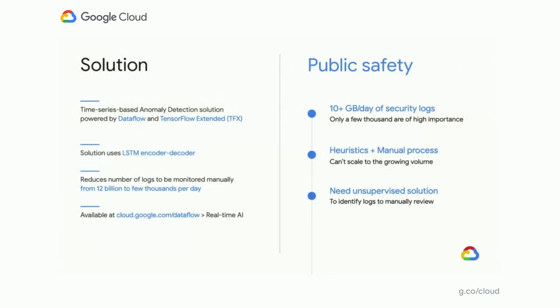Remember our motivating example with the public safety agency? We worked with this agency and created a solution based on a time series anomaly detection approach, powered by Dataflow and TensorFlow Extended. This solution uses an LSTM encoder-decoder pattern, and it reduced the number of logs that needed to be monitored manually from billions per day to just a few thousand per day — which is doable for their analytical workforce. This solution is now available on cloud.google.com Dataflow in the Real-Time AI section.